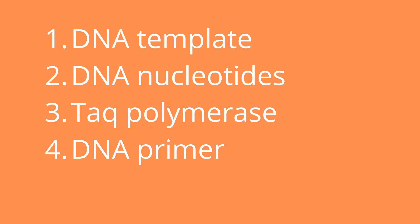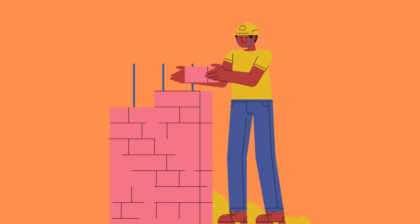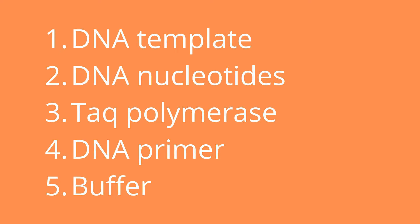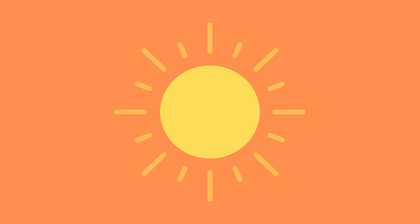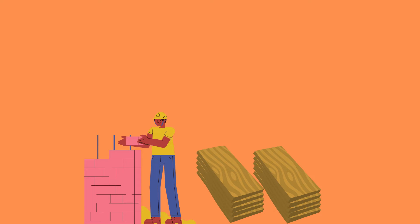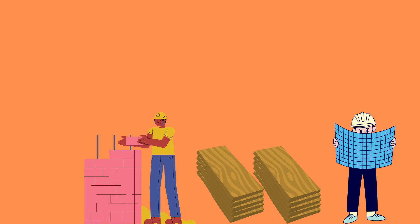Fourth, we need primers — short stretches of DNA that the Taq polymerase enzyme, or the builder, can attach to and from which it can start building our house. In this house example, these primers act as a foundation upon which the house can be built. Fifth and finally, we need a buffer to ensure the right external conditions for the reaction are met, which can be thought of as nice weather making the building process easier.